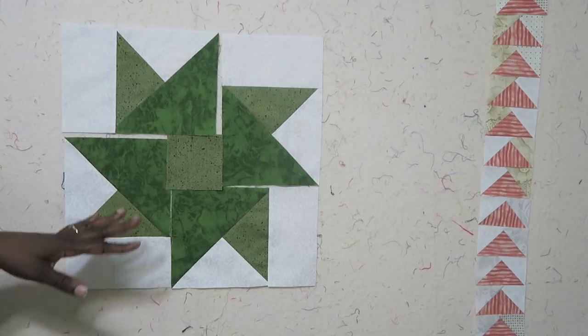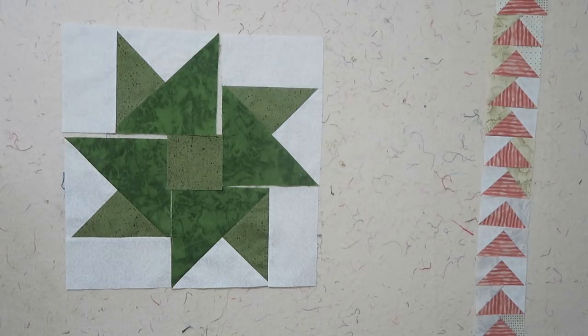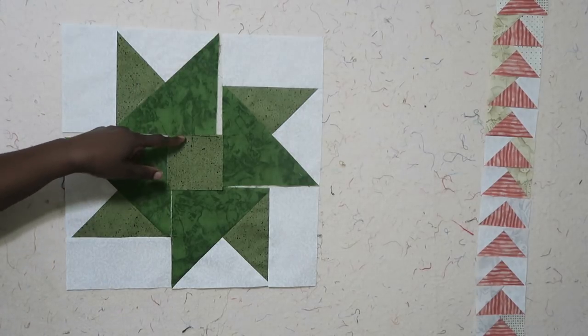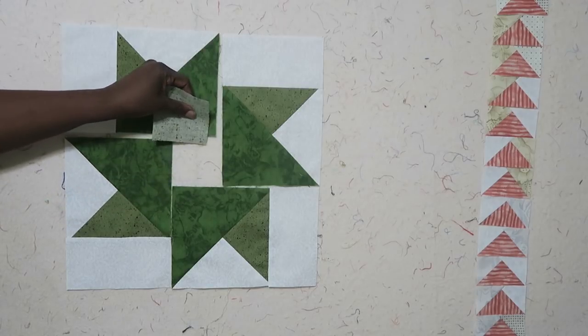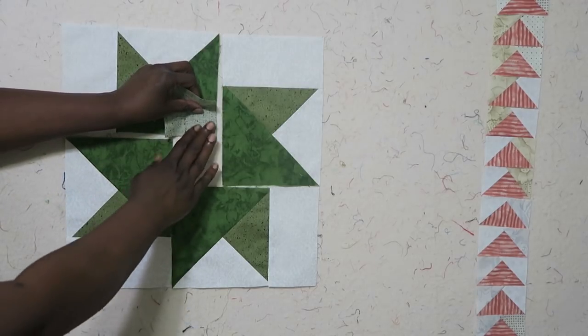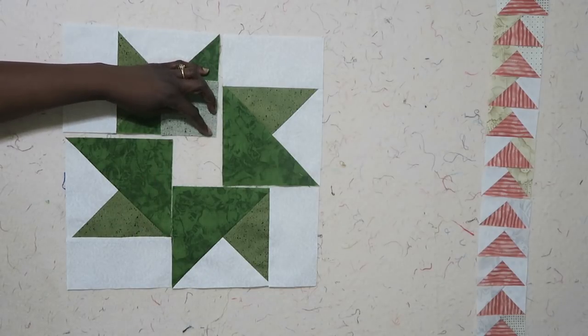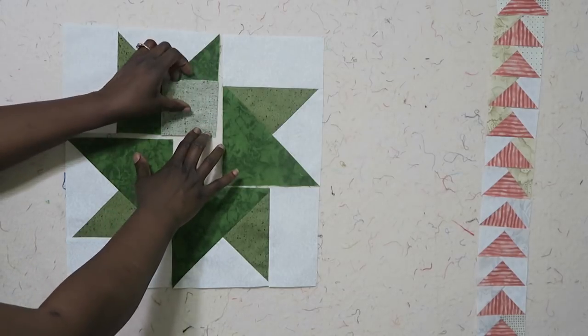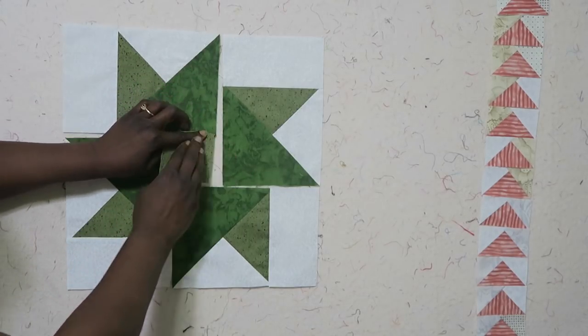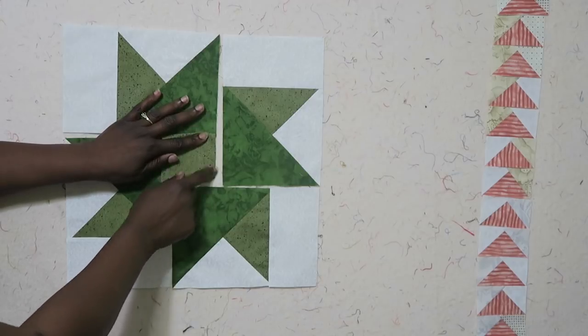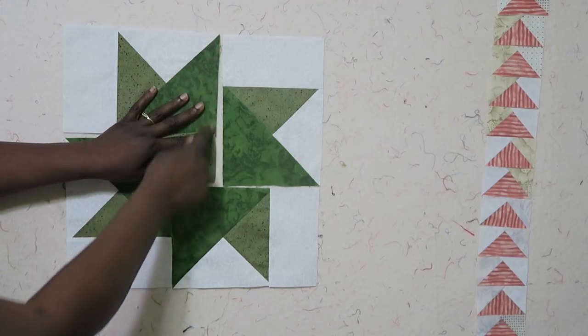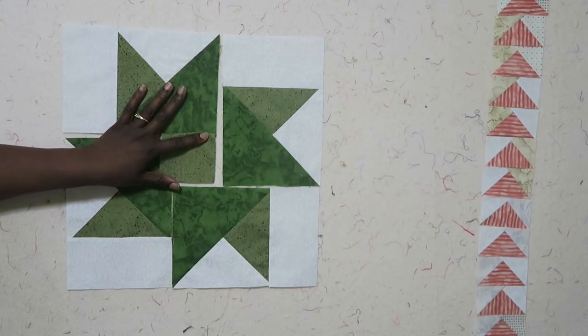We're going to actually do what's called a partial seam. I am going to take this square, put it onto this piece, and then I'm just going to sew half of this seam and then I'm going to stop. Once that is sewn you'll have your seam here and now this unit will line up completely with the next unit.